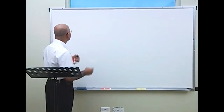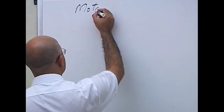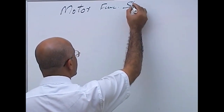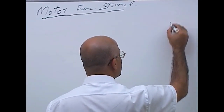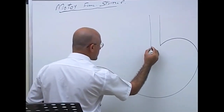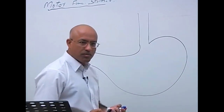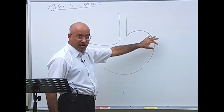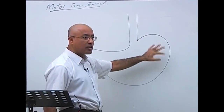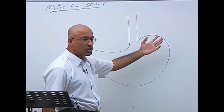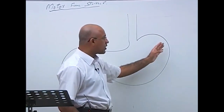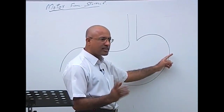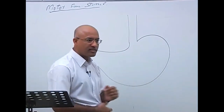We will talk about the motor functions of the stomach. Remember, the stomach has other functions like secretory functions and digestive functions, but right now we will focus on motor functions. You already must be knowing about the musculature of the stomach from histology. The stomach has basically mucosa, submucosa, and muscularis externa. In the muscularis externa, unlike other parts of the gastrointestinal system, it has three layers.